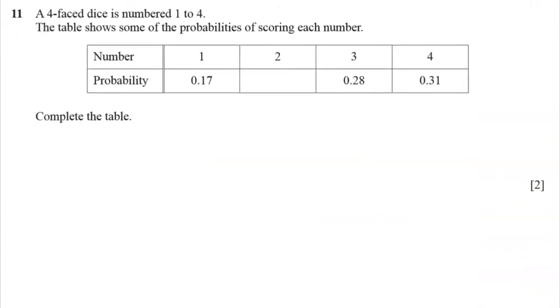Question 11. A 4 face die is numbered 1 to 4. Table shows probability of scoring each number. Complete the table. So what we know about probabilities is you can only get 1 to 4. And so that's all the probabilities, which means the probability should add up to 1. So let's call this x. We're doing 0.17 plus x plus 0.28 plus 0.31 equals 1.